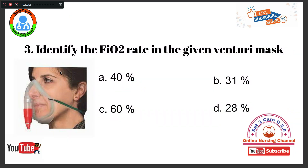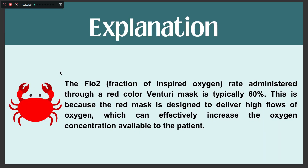This is an image-based question. Identify the FiO2 rate in the given Venturi mask. Option A, 40%. Option B, 31%. Option C, 60%. Option D, 28%. The FiO2 rate given through a red-collar Venturi mask will be Option C, 60%. FiO2 indicates the fraction of inspired oxygen. The rate administered through a red-collar Venturi mask is typically 60%, because it is designed to deliver high flows of oxygen, which effectively increases the oxygen concentration available to the patient.